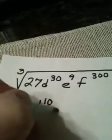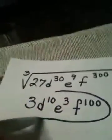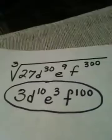9 divided by 3 is 3, so E to the 3rd. And 300 divided by 3 is 100, so F to the 100th. And we're done.